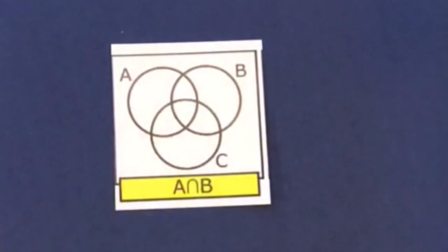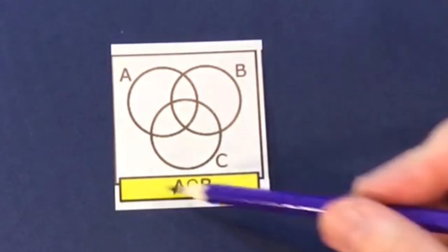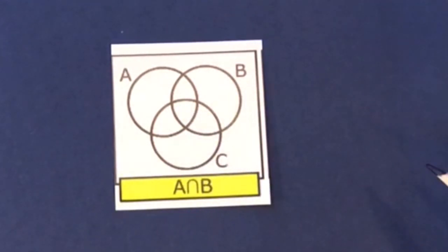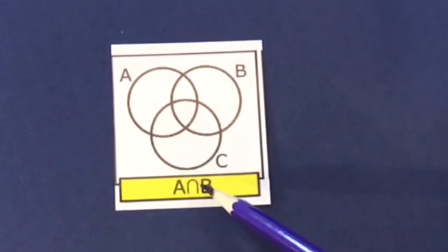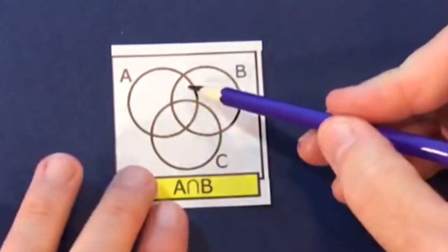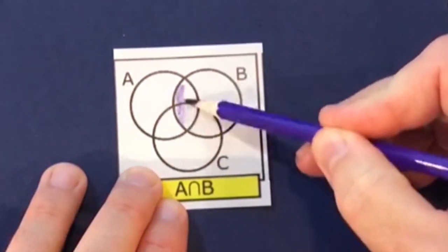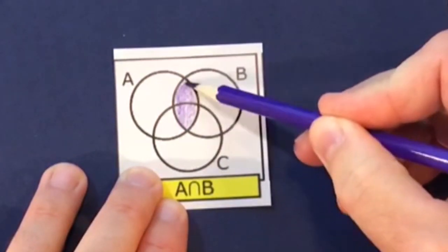This question is A intersection B. Only sets A and B are mentioned, so we can ignore the circle representing set C altogether. It's the intersection — the overlap — of A and B, which is the region in the middle.